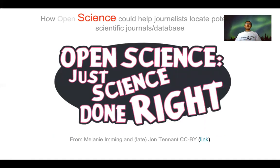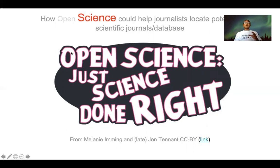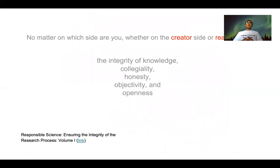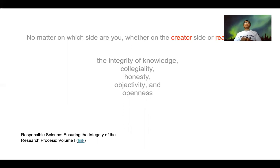How open science could help journalists is to remember the principles of science. This sticker is designed by Melanie Eming and John Tennant, two of my friends in the Open Science Movement. They say that open science is just science done right — so in the future, we'll delete the word 'open' and leave just 'science.' In the basic principles of science, no matter which side you're on — creator or reader — we have to maintain the integrity of knowledge and collegiality, so everything will be shared and discussed among colleagues openly. We have to be honest, objective, and open about it.